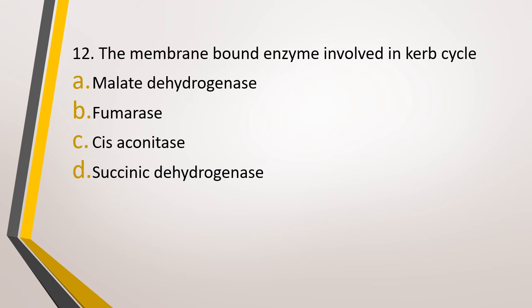Question number 12. The membrane-bound enzyme involved in the Krebs cycle is? Option A: Malate dehydrogenase. Option B: Fumarase. Option C: Cis-aconitase. Option D: Succinic dehydrogenase. The correct answer is Option D — succinic dehydrogenase.